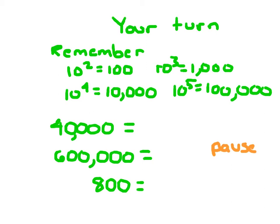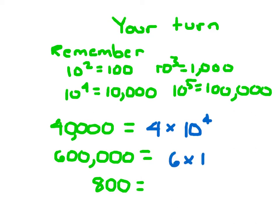For that first problem, did you get 4 times 10 to the fourth? For the second problem, that would be 6 times 100,000, and that 100,000 is just 10 to the fifth power. Finally, for that last one, that's 8 times 10 squared.